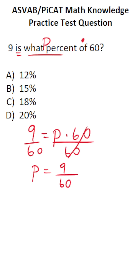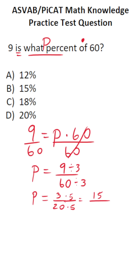There are a few ways to solve this. First, I'll reduce 9 over 60 by a common factor of 3 to make the numbers easier. 9 divided by 3 is 3, and 60 divided by 3 is 20. Now to convert 3 over 20 to a percent, I can multiply both numerator and denominator by 5. 3 times 5 is 15, and 20 times 5 is 100. So 15 over 100 is 15 percent — the answer is B.